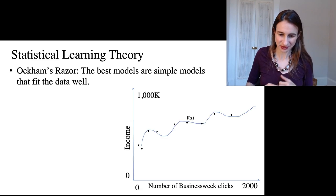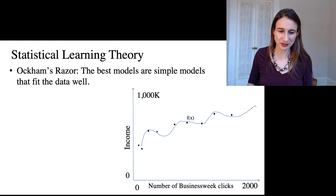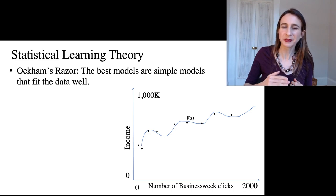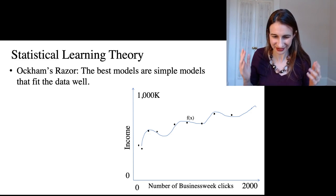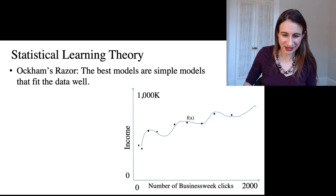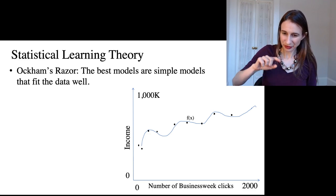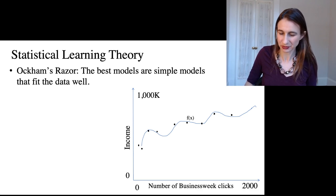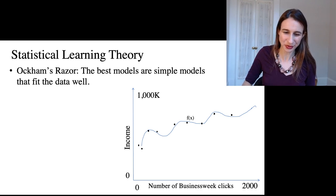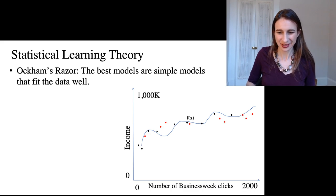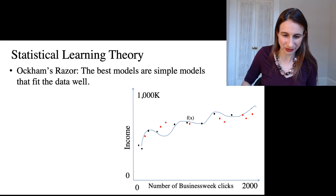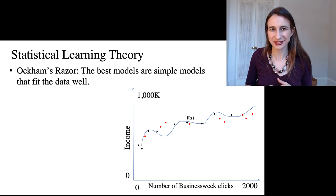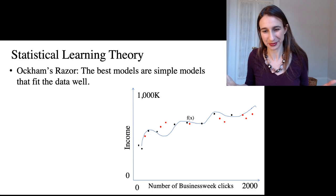So let's consider this plot. This is a plot where we're trying to predict someone's income as a function of the number of clicks on the Businessweek website. So here we have a whole bunch of data points and we have a model that's totally overfitted and won't generalize well, so that when we see new test points the model just won't be able to predict very well on them. We would rather have preferred something like a straight line that would have predicted well out of sample, not just in sample.